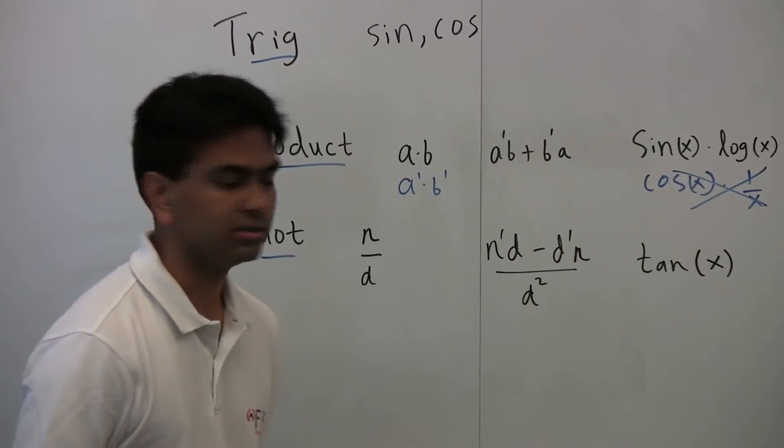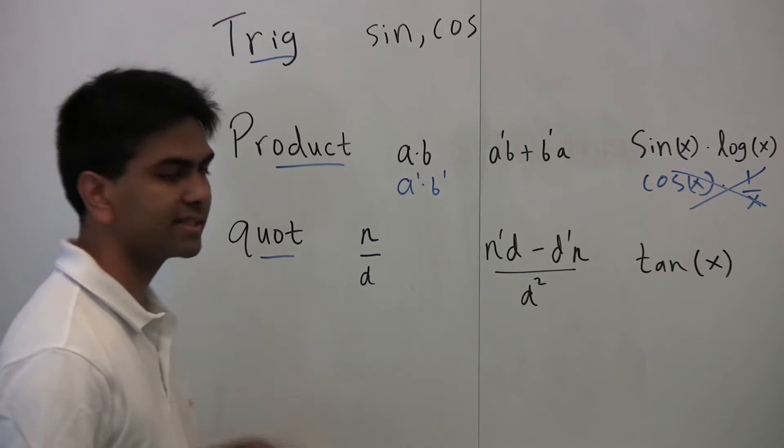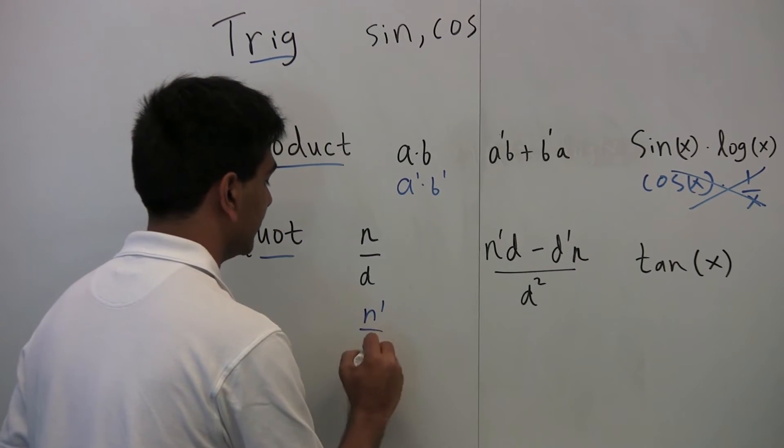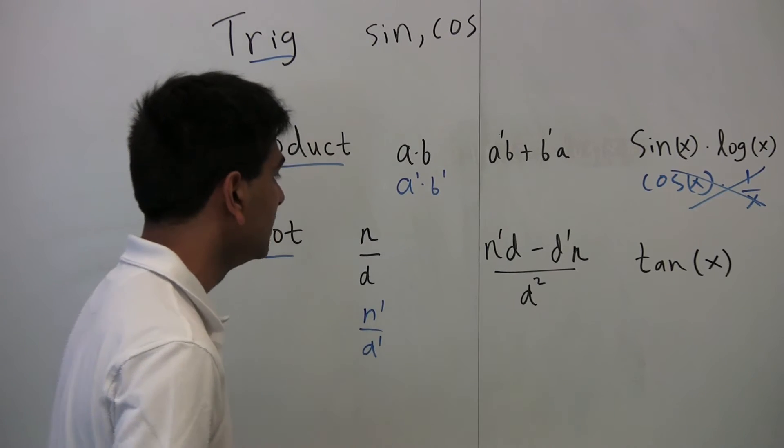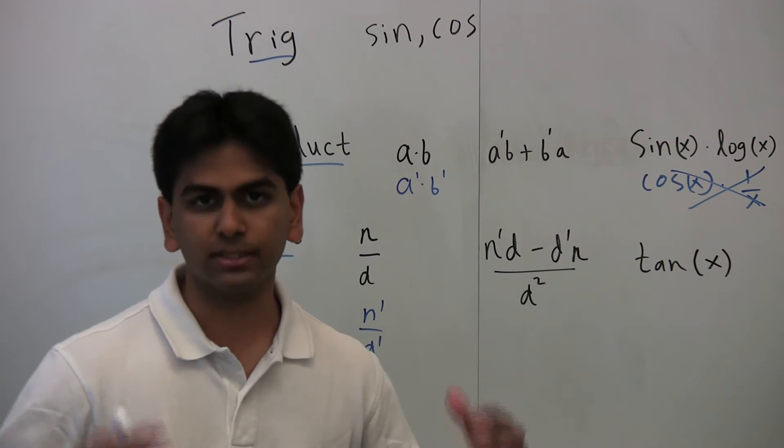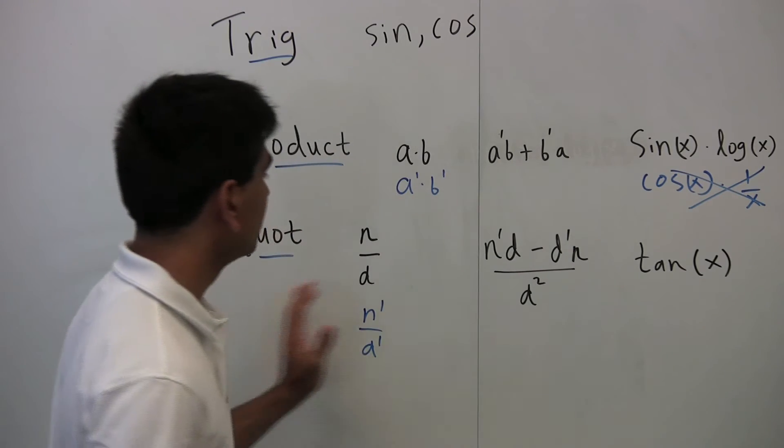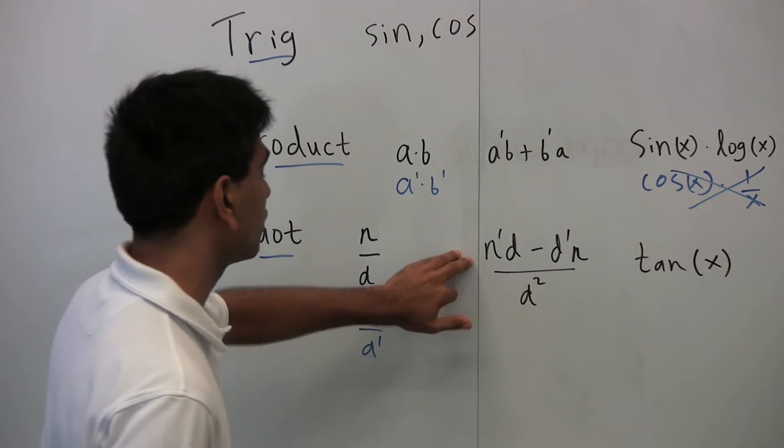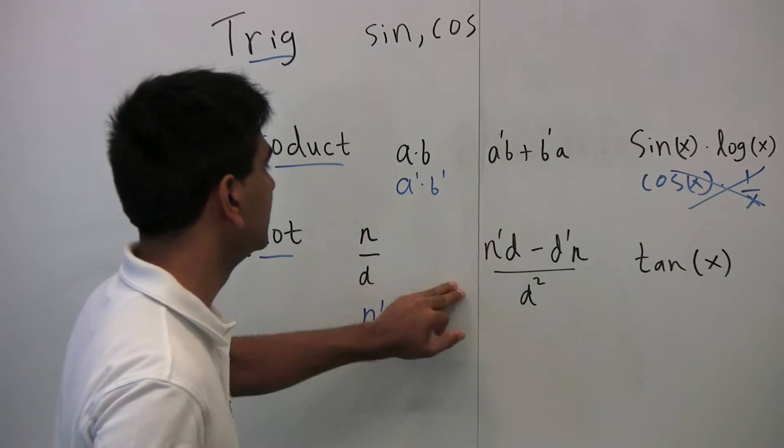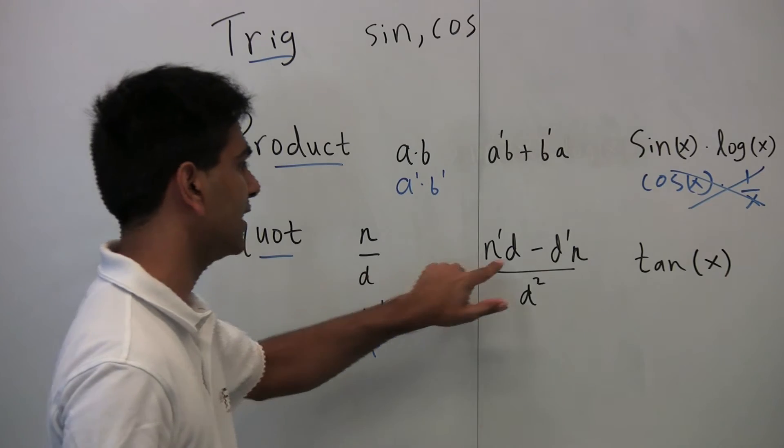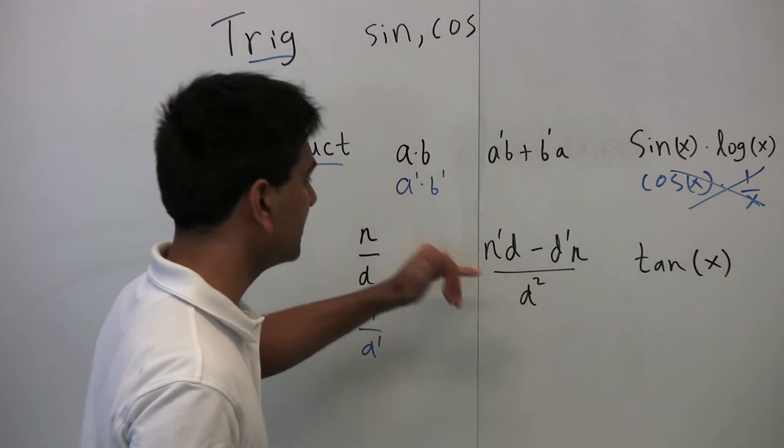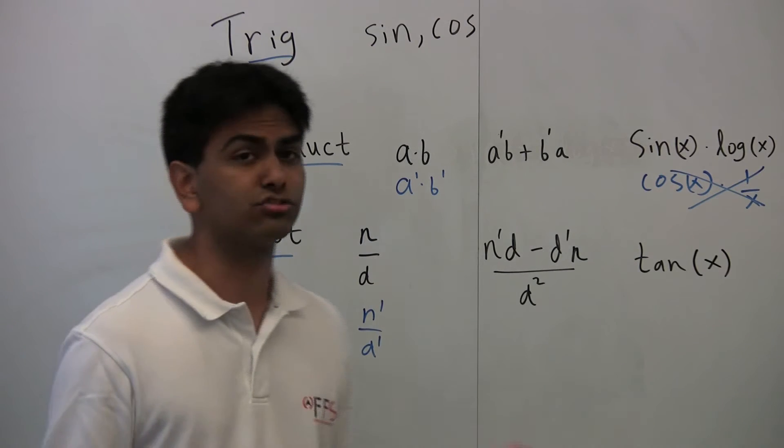Finally, the quotient rule. If you have the numerator over the denominator, the derivative is not simply n prime over d prime. Again, it's tempting to do that, but if you're a new calculus student, just remember, don't forget the product and quotient rules. So this rule is the numerator over here of the derivative. It's really similar to the product rule. It's just the derivative of the first guy times the second guy. Now there's a minus in the middle instead of a plus. The only difference here now is you just divide it by the denominator squared.